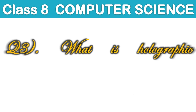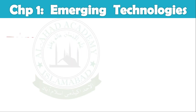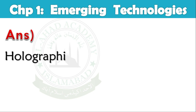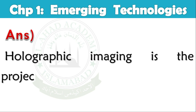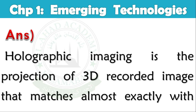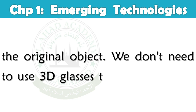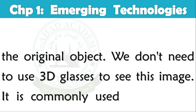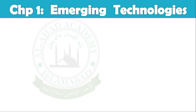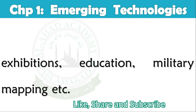Question No. 3: What is holographic imaging? Answer: Holographic imaging is the projection of a 3D recorded image that matches almost exactly with the original object. We don't need to use 3D glasses to see this image. It is commonly used in meetings, exhibitions, education, military mapping, etc.